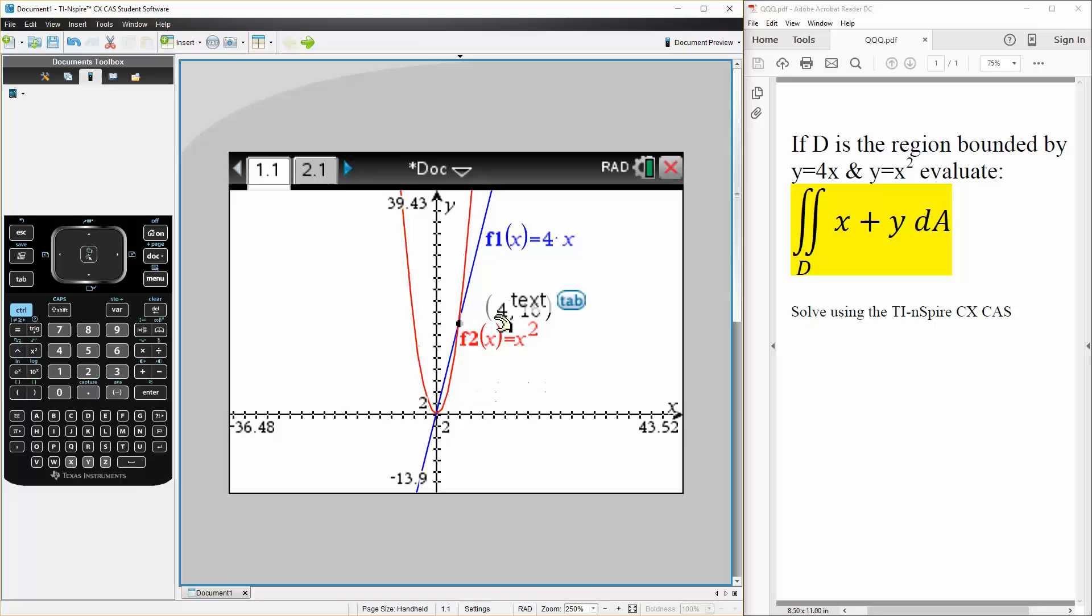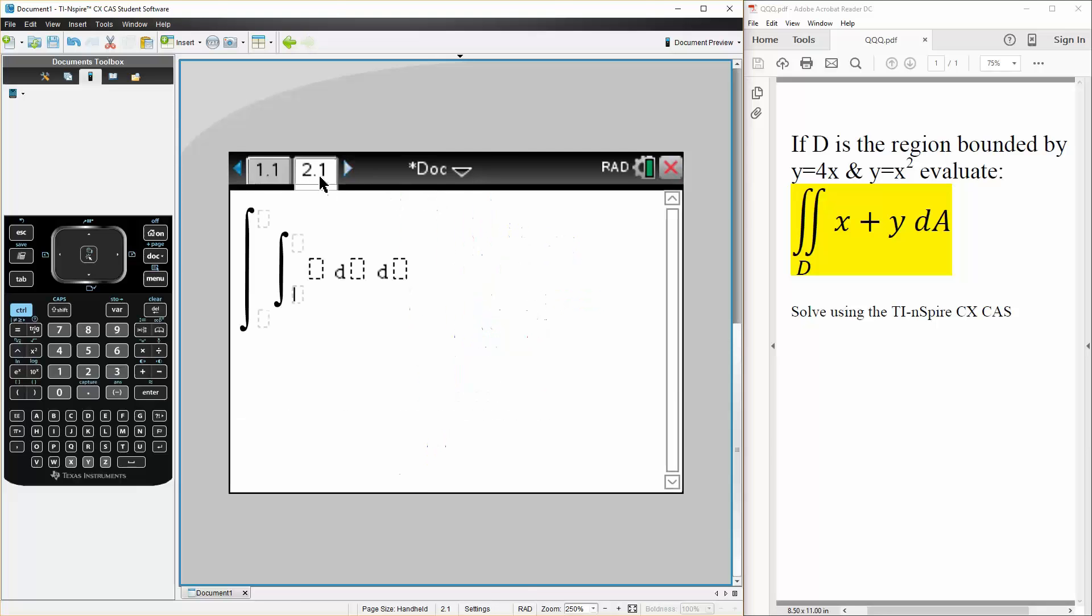We have 0, 0, and 4, 16. So let's do that. So we can say 0, 4. This is for a dy dx. So dx would correspond to 0, 4.